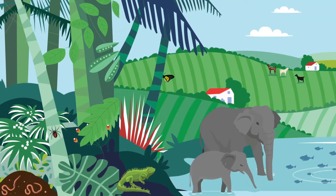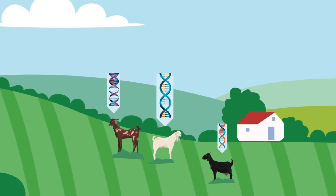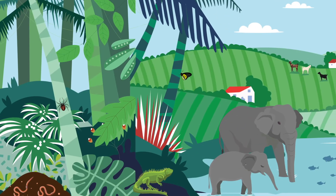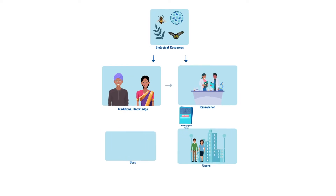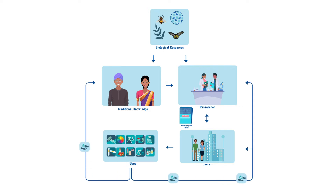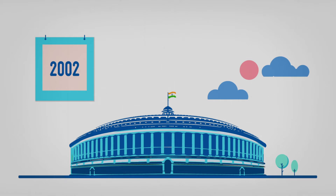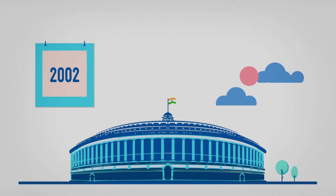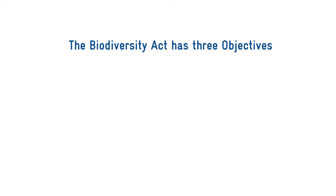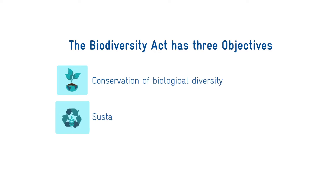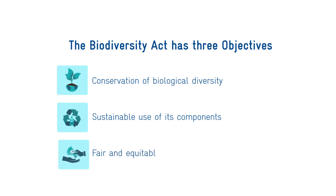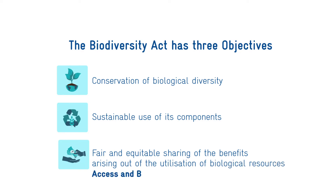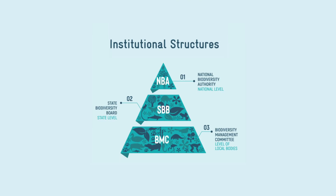The CBD addresses all aspects of biological diversity, i.e., genetic resources, species diversity and ecosystems in their entirety. It also introduced the principle of fair and equitable benefit sharing for access to and use of genetic resources. In 2002, the Parliament of India enacted the Biological Diversity Act. In line with the goals of the CBD, India's Biodiversity Act has three objectives: the conservation of biological diversity, the sustainable use of its components, and the fair and equitable sharing of the benefits arising out of the utilization of biological resources — or in short, Access and Benefit Sharing, or ABS.